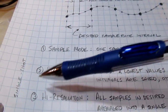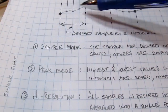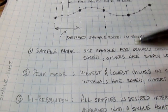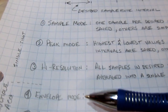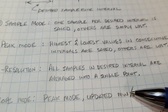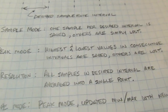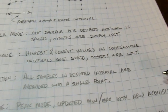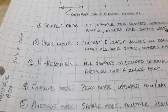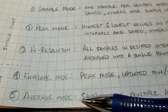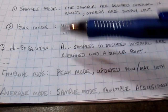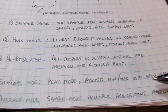All of these sample modes work on single-shot situations where you do a single acquisition and display the data. If we consider taking multiple acquisitions, we can add more modes. Envelope mode is really peak mode but updating the min and max values with new acquisition data, keeping track of the true min and max over time. Average mode is basically sample mode but averaging sample points together from multiple acquisitions.